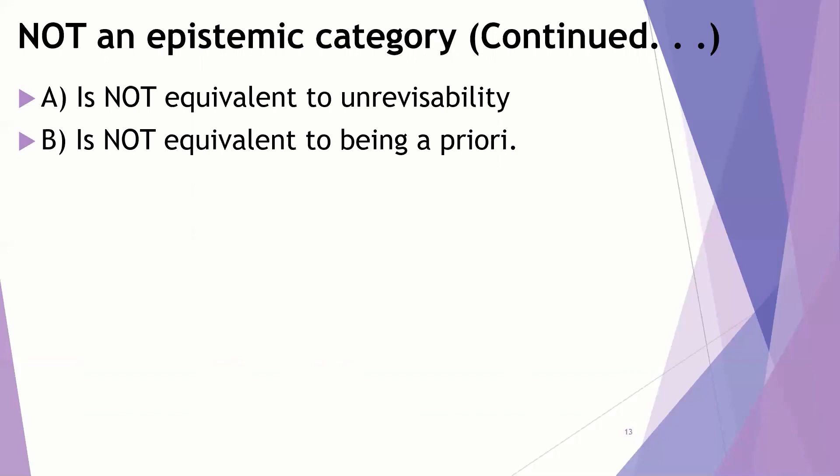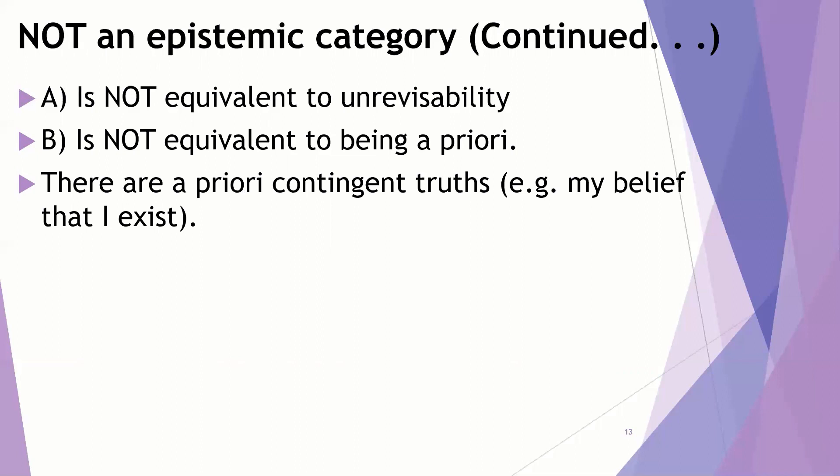It's also not equivalent to something being known a priori. Just quickly, having a belief a priori is something that might be figured out prior to any particular experiences of the world. For example, the Pythagorean theorem, you can figure that out without having any particular experiences. And certainly, just to illustrate this, there are a priori contingent truths, things that we know a priori, but they're not metaphysically necessary. My belief that I exist, I know that a priori. I don't have to have any particular experiences, but it's a contingent truth. It's possible that I didn't exist.